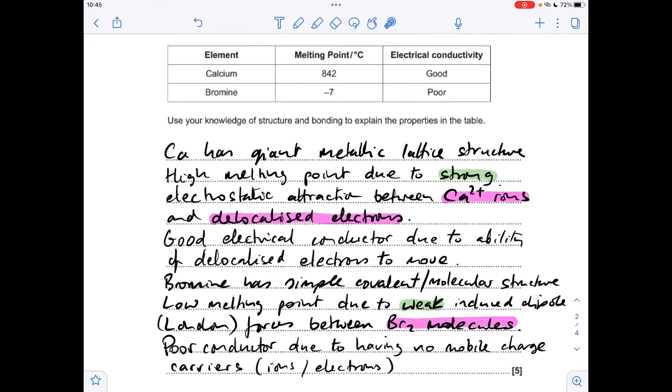Another important thing to mention is the relative strength of the interactions. Obviously in a metal you've got this high melting point so that's telling you that this metallic bonding is strong, whereas these intermolecular forces in bromine are obviously weak and give you those totally different melting points.